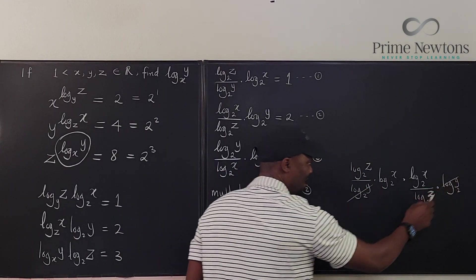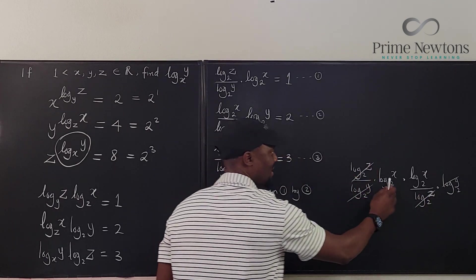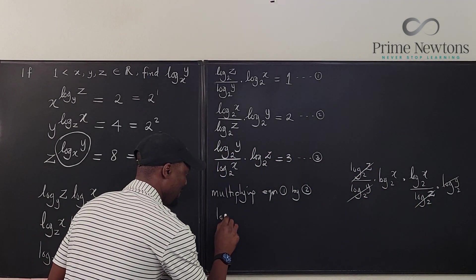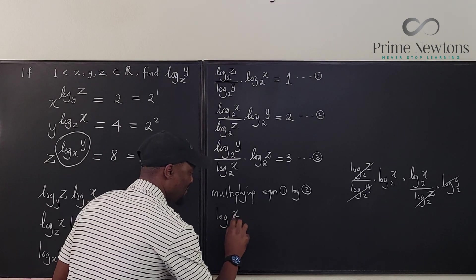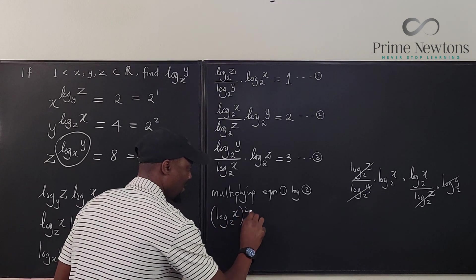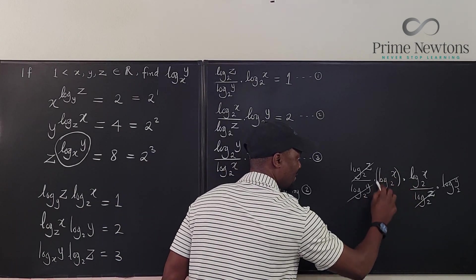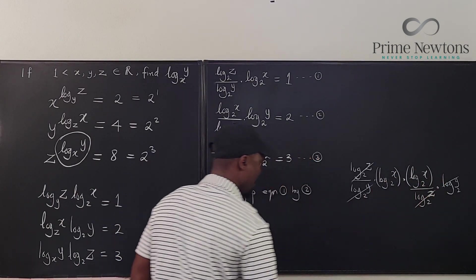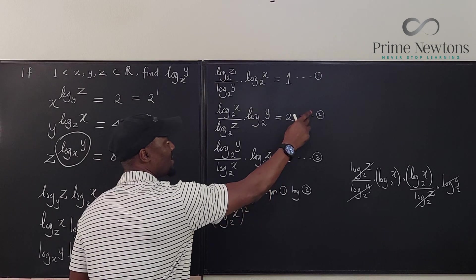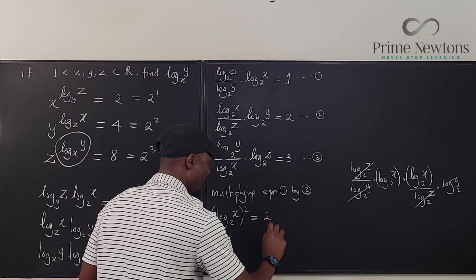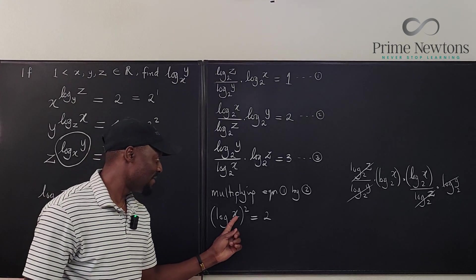This is going to cancel this. This is going to cancel this. And this is all you have left. We're going to have log x base two squared, which is the product of these two. Let's put it in parentheses. And it's going to be equal to this times this, which is going to be equal to two. And immediately I can even find x.